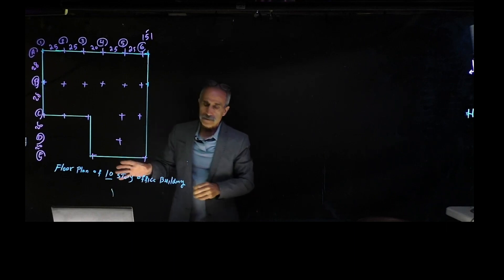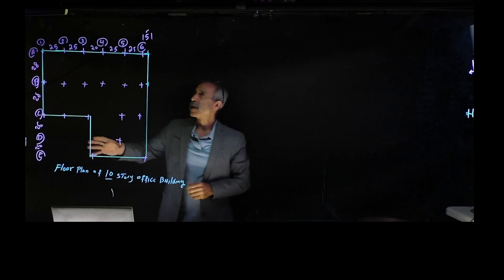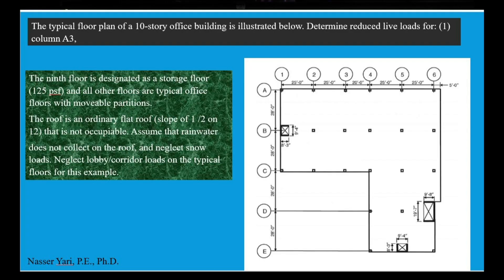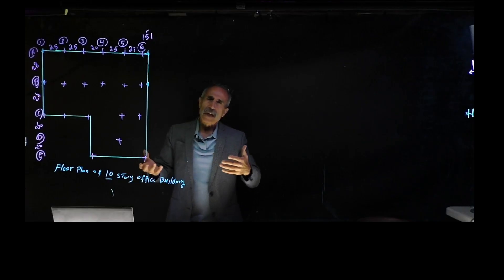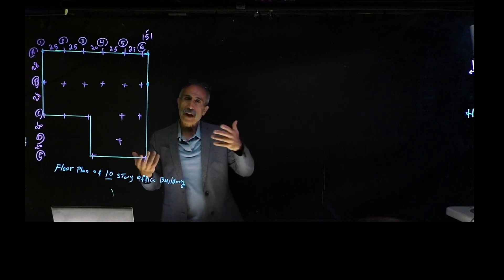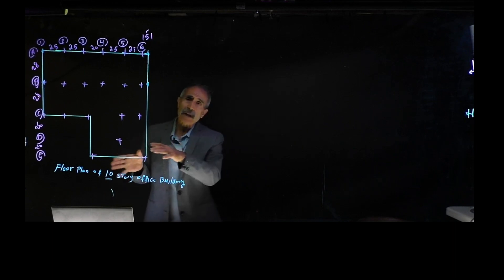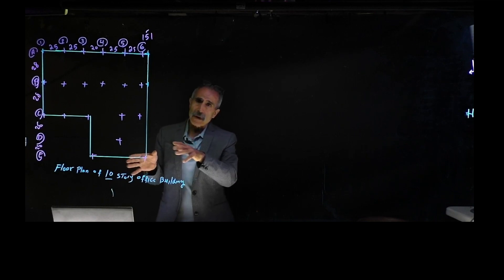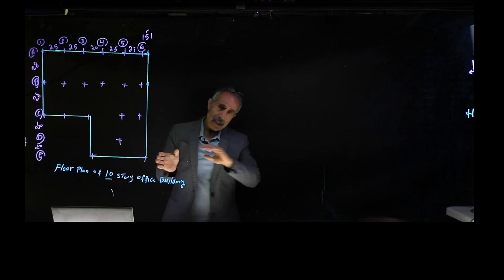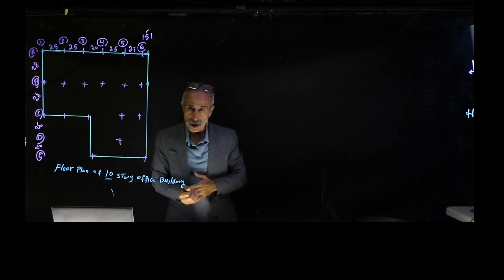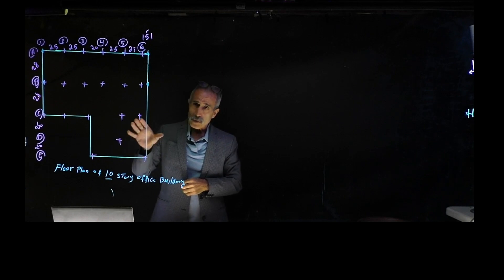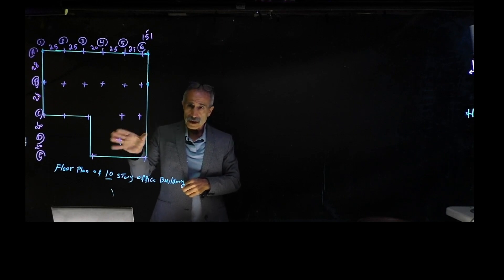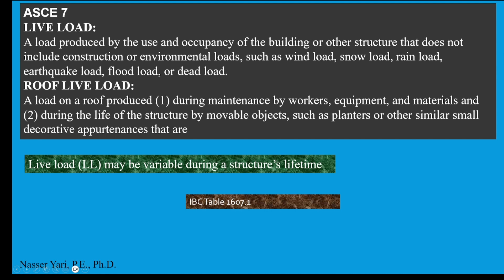Let's talk about the building a little bit. The 9th floor is storage, which is 125 pounds per square foot. But before I get to that, let's talk about what live load is, what the code says, how we calculate it, and what we should know. Then we come back and calculate this problem. If you already know all that, go ahead and move on in the video to see how it's done. But I recommend you watch and learn about live load — it's really complicated and interesting.